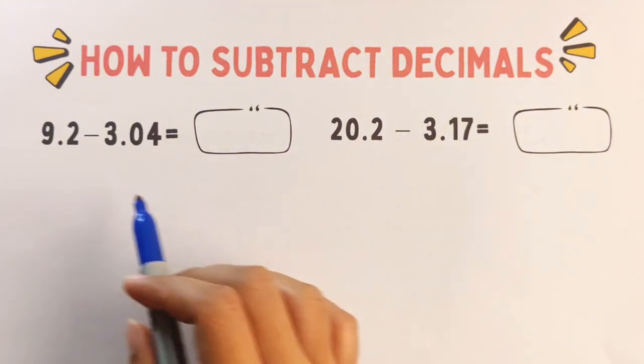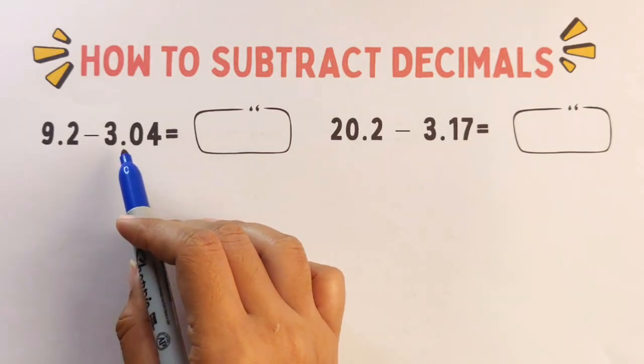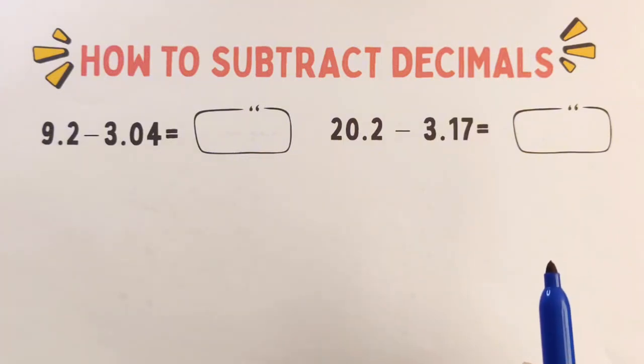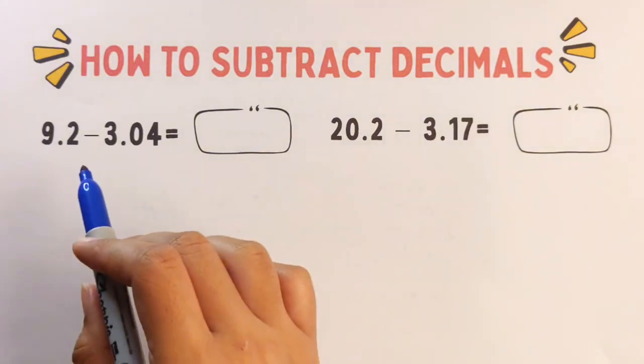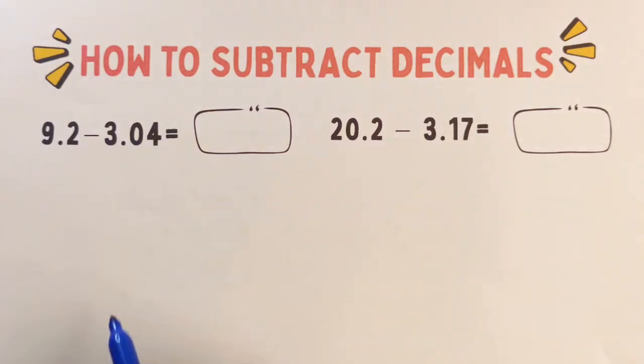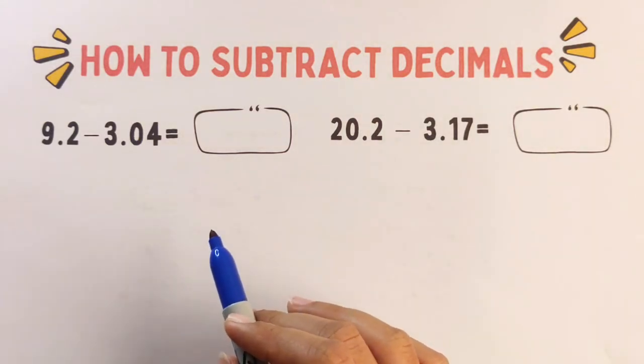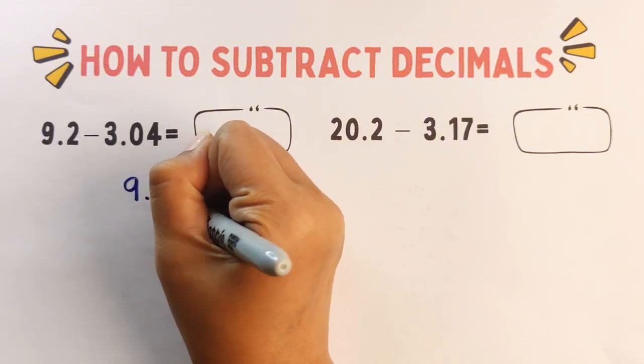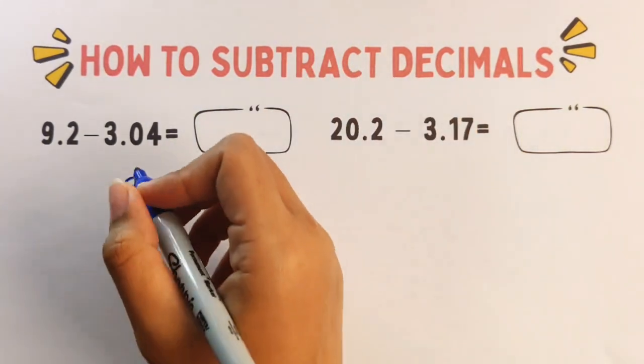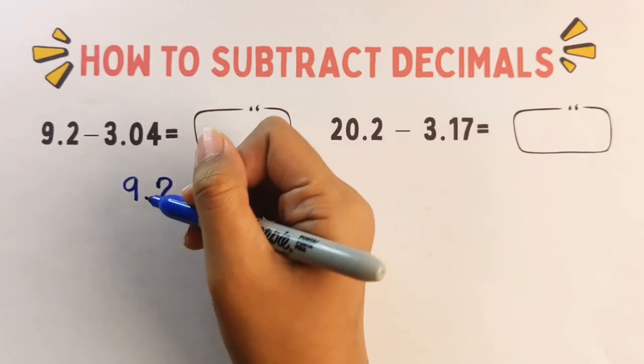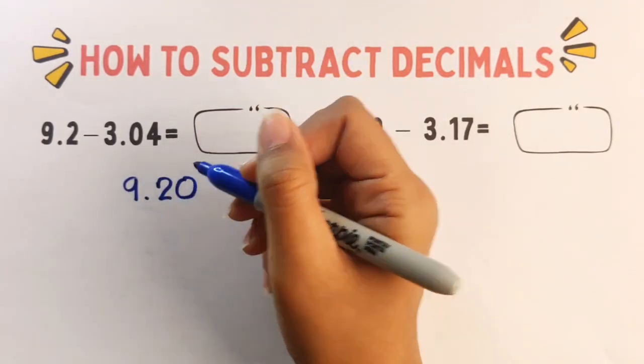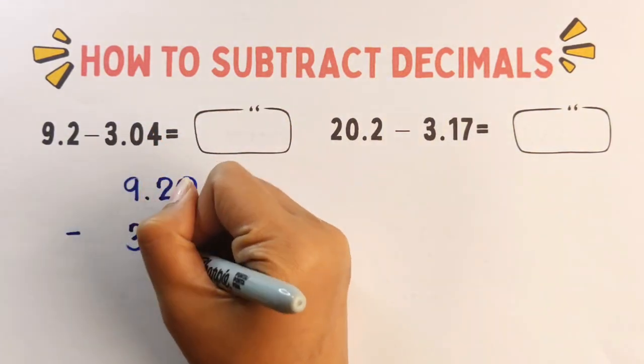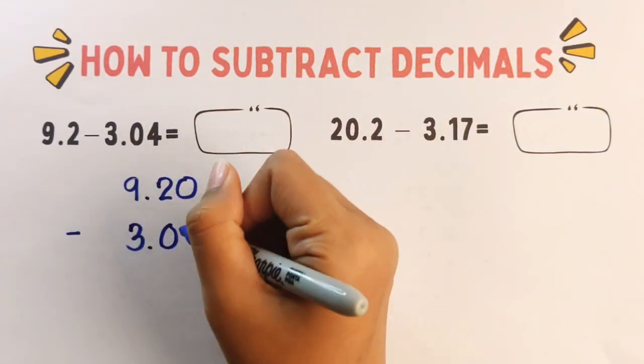So we have 9.2 minus 3.04. Step number one, line up the decimal points. We write both numbers vertically with the decimal points lined up. Since 9.2 has only one decimal place, we add zero to make it 9.20, then minus 3.04.